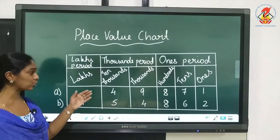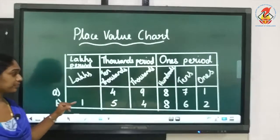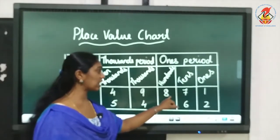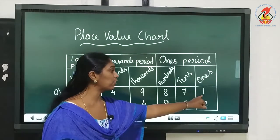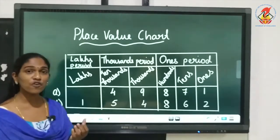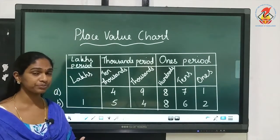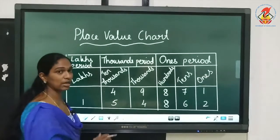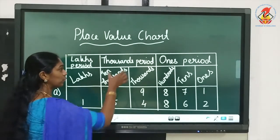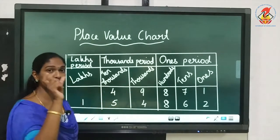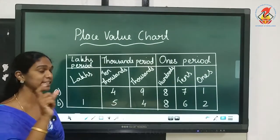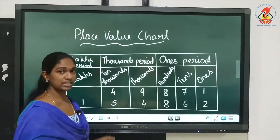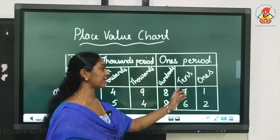As an example, the first number has 4 under the ten thousands place, 9 under the thousands place, 8 under the hundreds place, 7 under the tens place, and 1 under the ones place. It is a 5 digit number. You have to take the 2 numbers in the thousands period together and read it as 49,871, not as 4 ten-thousands and 9 thousands separately.